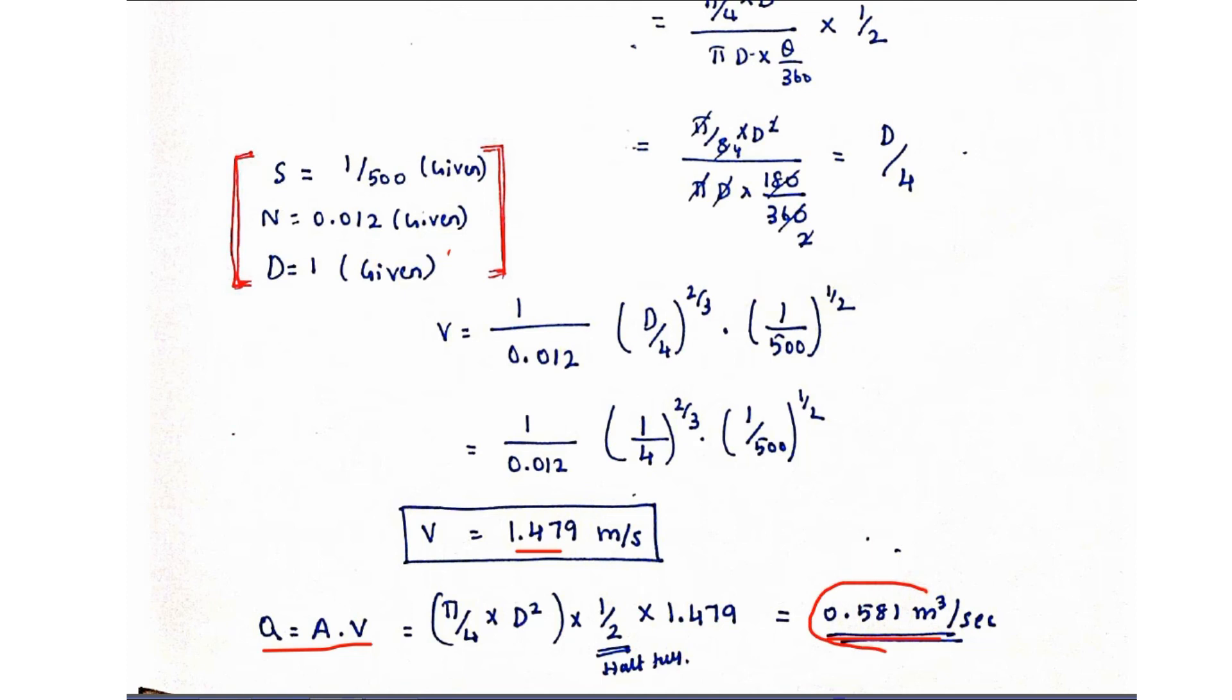This is the final discharge in the sewer, 0.581 meter cube per second. This is the method to solve the sewer problem. We will see in the next video. Thank you.